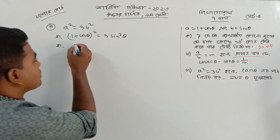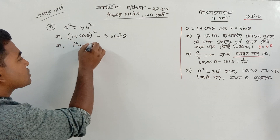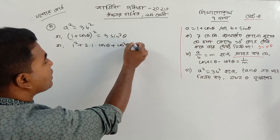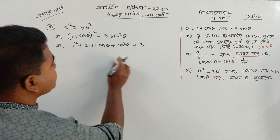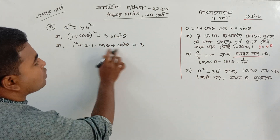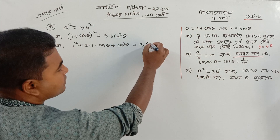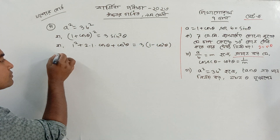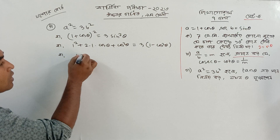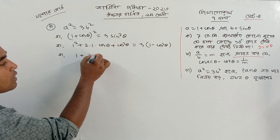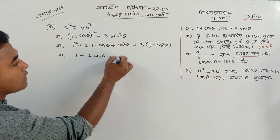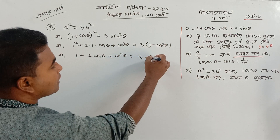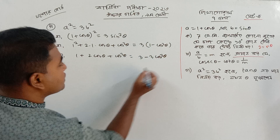A square plus 2AB plus B square. That again, all kinds of cos — that means sin square, 1 minus cos square. 1 square equal to 1. 2 cos theta equal to 3 minus 3 cos square theta.